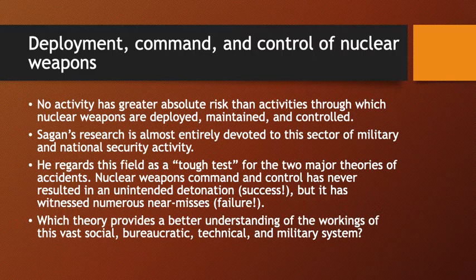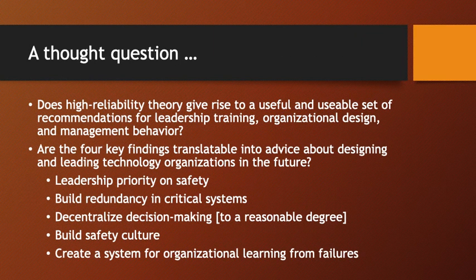Nuclear weapons command and control has never resulted in an unintended detonation. We've never had an unintended explosion. But we have witnessed a number of near misses - both hydrogen and fission weapons dropped from aircraft or dropped on the runway, never resulting in an explosion but raising very alarming possibilities. His question is which theory provides a better understanding of the actual workings of this vast social, bureaucratic, technical, and military system.